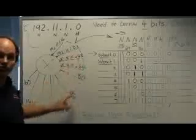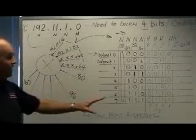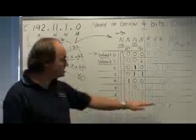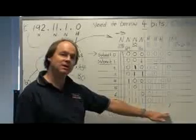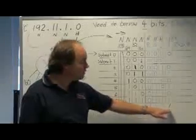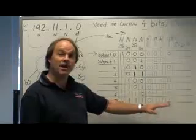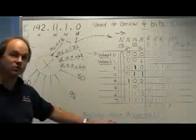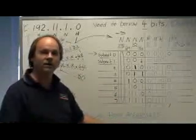This will be the network address. At the end of the range there's a broadcast address. The broadcast is similar to the mask, but in this case we put all ones in the host portion. By placing all ones we find the broadcast address. We're not allowed to use that address for a host, a printer, a server and so on.